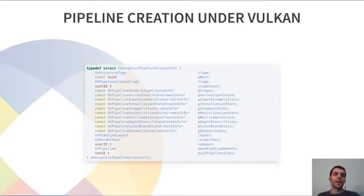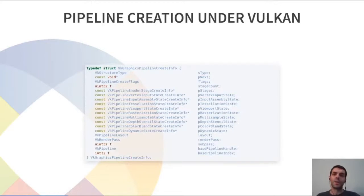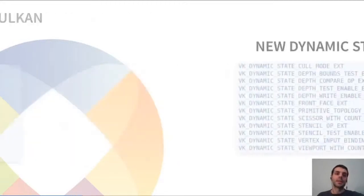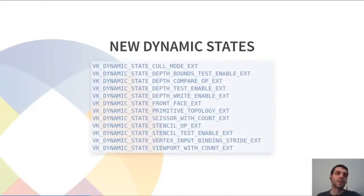So why does Vulkan want you to do that? The answer has always been optimization. Giving all the information in advance gives more chances for current or even future implementations to optimize how the pipeline works. It's the safe choice. And despite this, you can see there's a pipeline creation parameter with information about dynamic state — things that can be changed when using the pipeline without having to create a separate and almost identical pipeline object. So what the extension does should be pretty obvious now: it adds a bunch of additional elements that can be changed on the fly without creating additional pipelines.